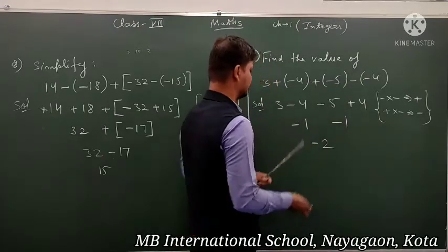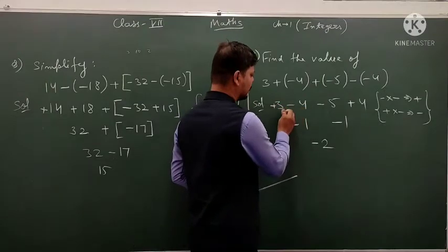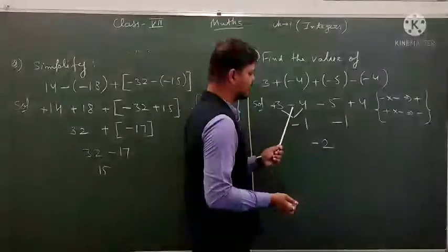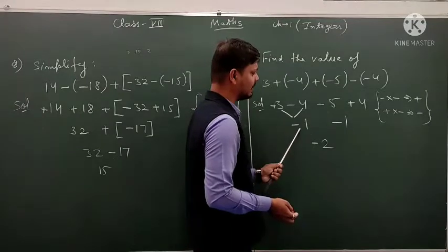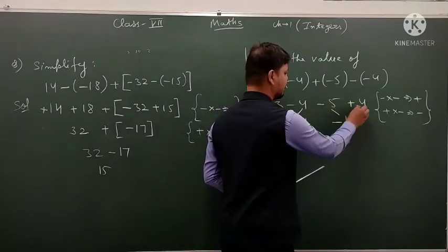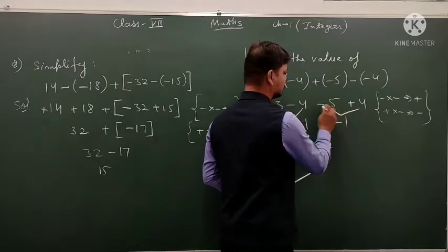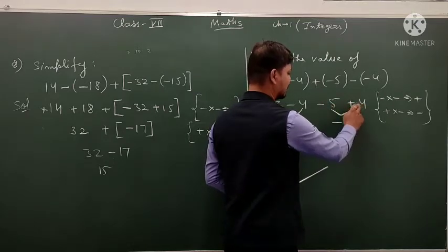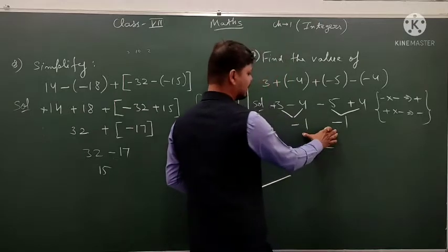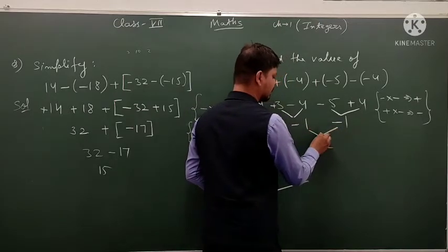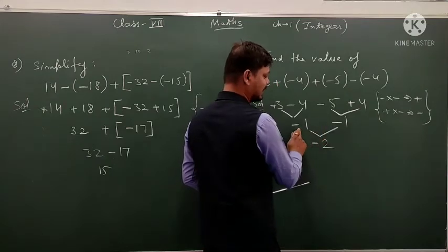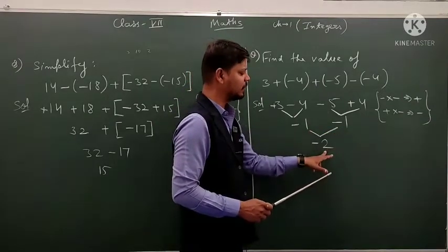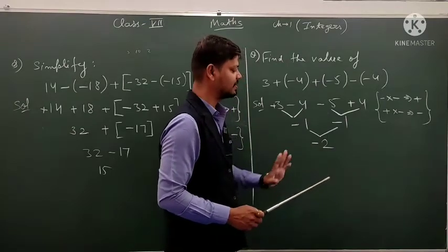Ab neeche addition subtraction ho raha hai. Plus ka 3 aur minus ka 4 — in dono ko jab solve karoge, to plus and minus opposite sign integer subtract hoga aur greater number ka sign lagega. To in dono ko solve karne pe aaya minus ka 1. Similarly, minus 5 aur plus 4 ko solve kara — opposite sign integer subtract hota hai, to 5 mein se 4 ko subtract karenge, 1 aur greater number ka sign laga diya. Ab 2 integer aage — minus 1 aur minus 1, dono ka same sign hai, same sign integer add karenge aur greater number ka sign lagega. To 1 aur 1 ko add kar diya, 2 aur greater number ka sign laga diya — to aaya minus ka 2. Final answer aaya minus ka 2.